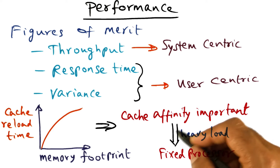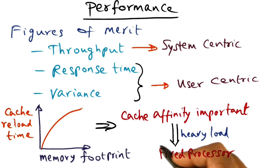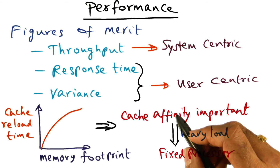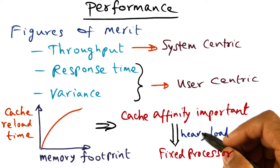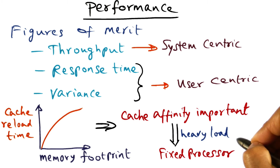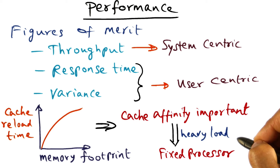Therefore, if the load is very heavy, a fixed processor scheduling may work out to be much better than the variants of minimum intervening scheduling policies. The moral of the story is that you really have to pay attention to both how heavily loaded your system is and what kind of workload you are catering to. Both those things play a part in deciding what may be the best scheduling policy.